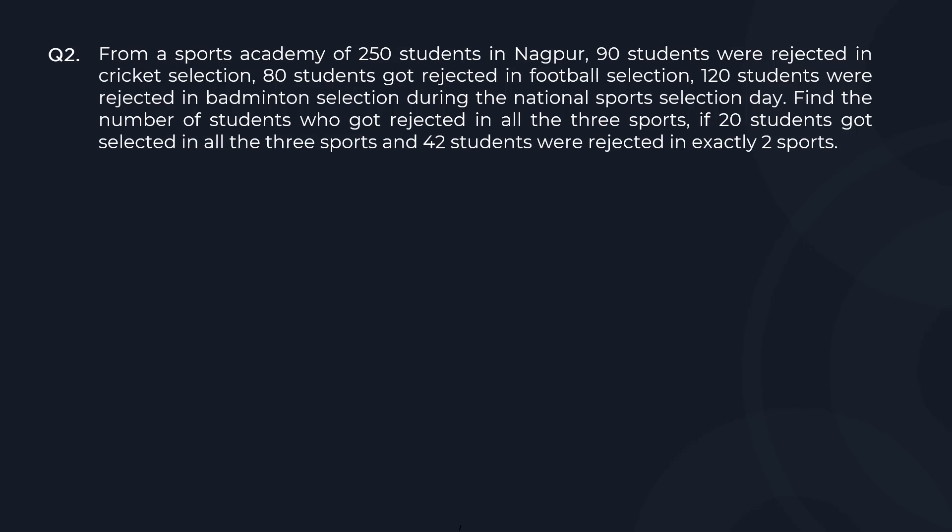From a sports academy of 250 students in Nagpur, 90 students were rejected in cricket selection, 80 students got rejected in football selection. We are looking at Venn diagrams of rejection. We are looking at 250 students total - cricket, football, and badminton. There are three of these things.